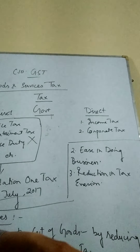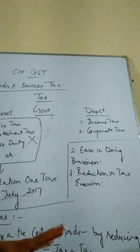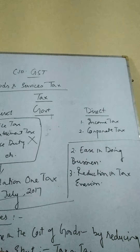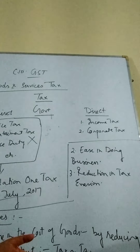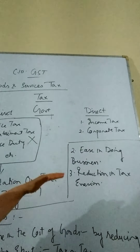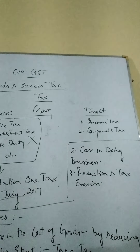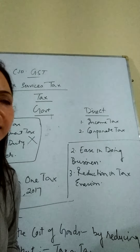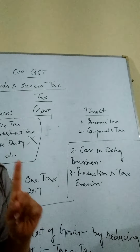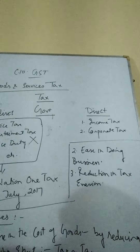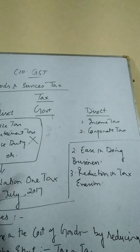Now the reduction of tax evasion is possible due to the implementation of one tax. This is the whole concept of GST — nowadays taxes are levied on goods and services only one time. In order to understand it more, let us go over the types of GST.